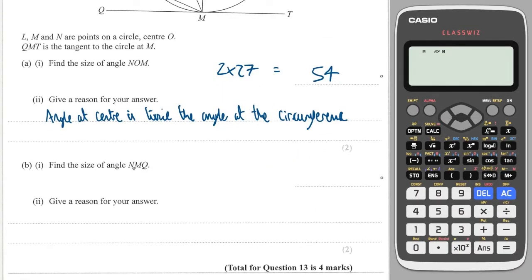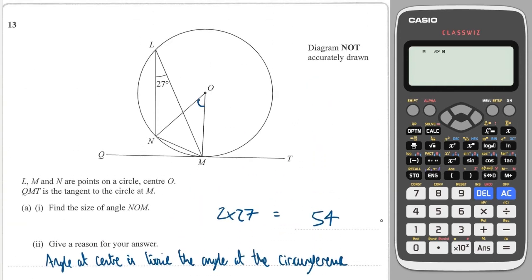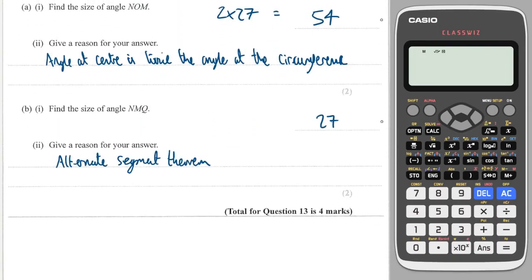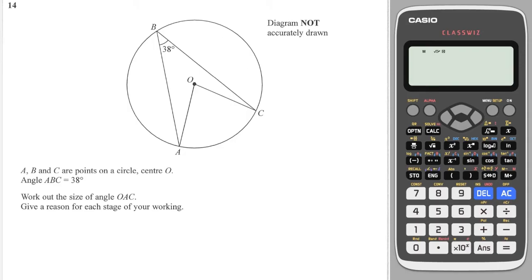Now we're looking for the size of angle NMQ. This angle is the same as the angle up here, and that is due to the alternate segment theorem. Normally you will see a tangent and a triangle, and the angle which the tangent makes with the first side of the triangle is the same as the opposite angle — this is called the alternate segment theorem.